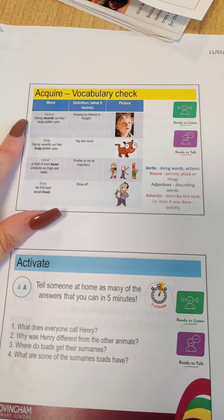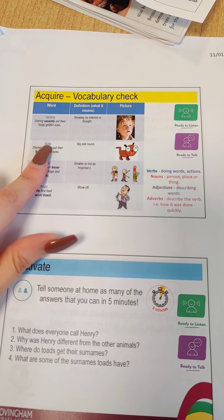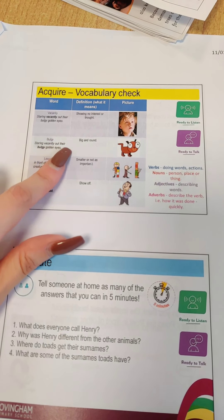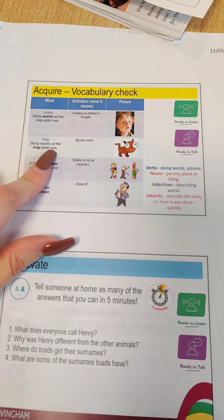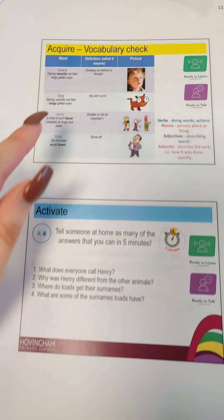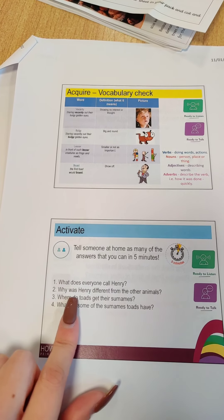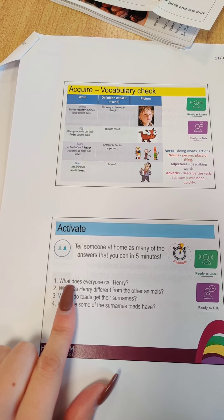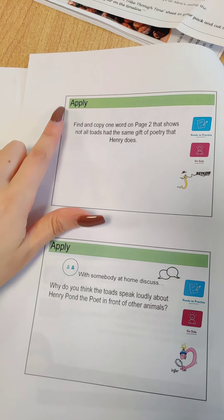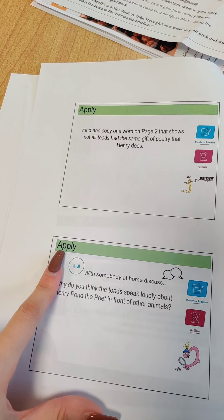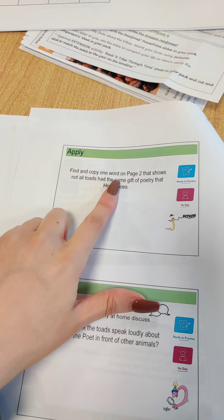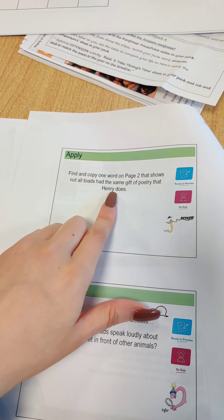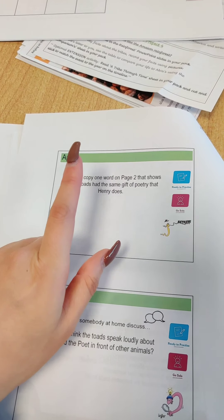Read chapter one. There's some key vocabulary here. For example, the adjective — the describing word — 'bulgy', and it gives you an example from the text: 'staring vacantly out their bulgy golden eyes', which just means their eyes are big and round. There are some activate questions to answer in five minutes. Do apply question one and apply question two. It says: find and copy one word on page two that shows not all toads had the same gift of poetry that Henry does. Remember, it's just asking for one word.